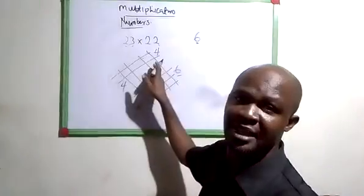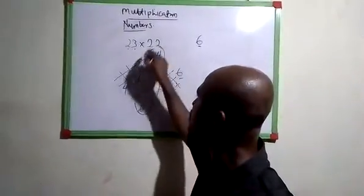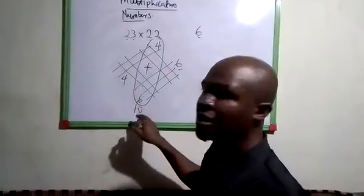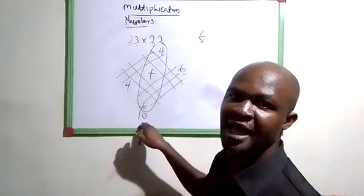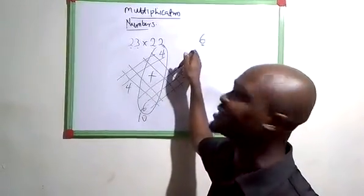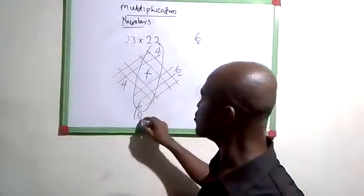Then the next part of the answer will be the addition of these two. If you add 4 to 6, you have 10. So this 10, the last digit is 0. The 0 will form the other part of the answer. Like we have 6, so this one will be 0.